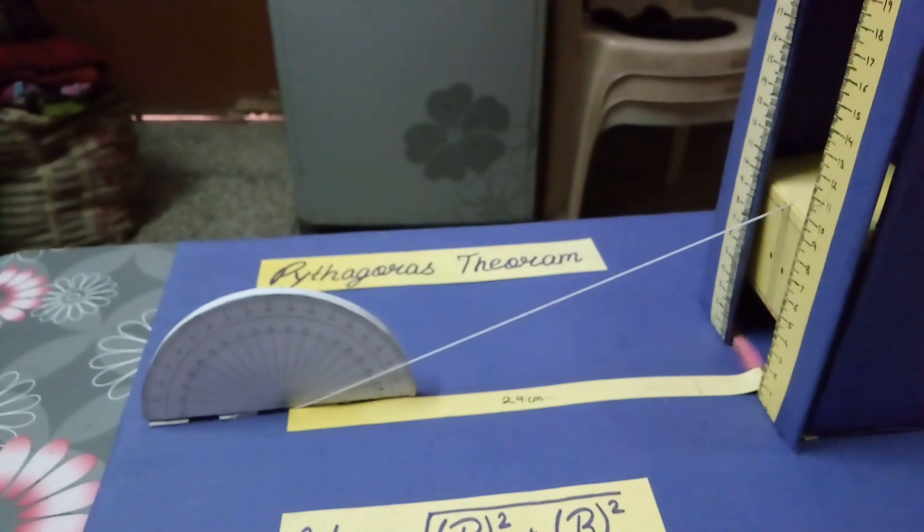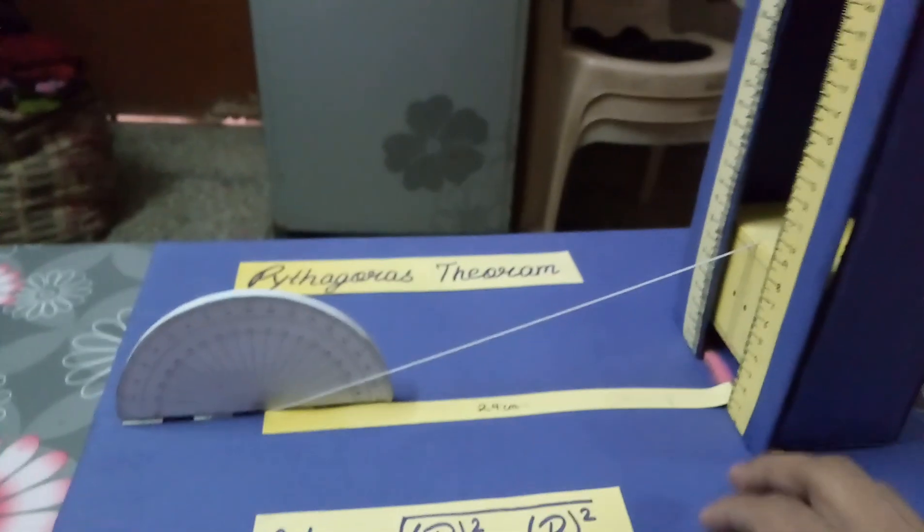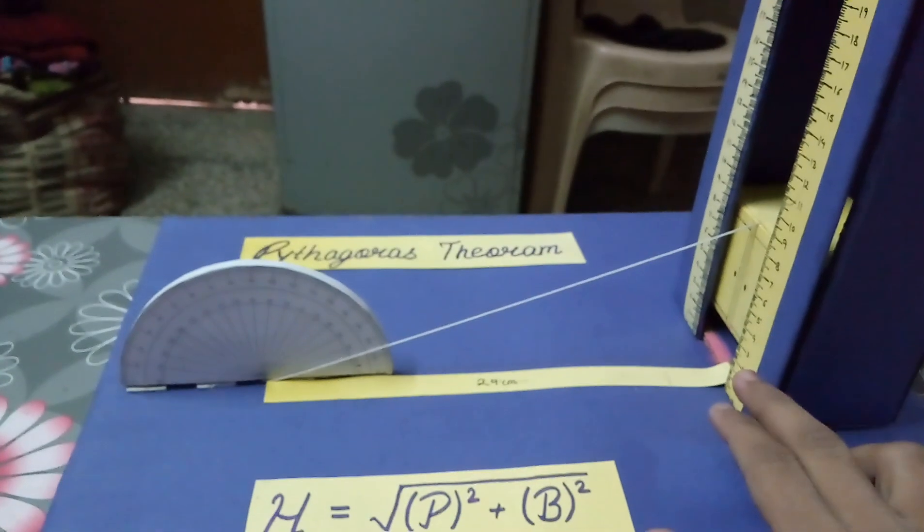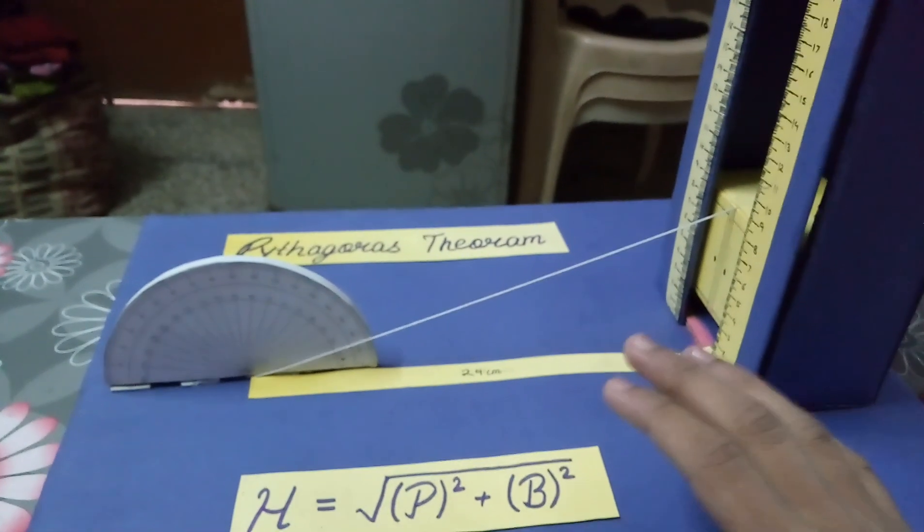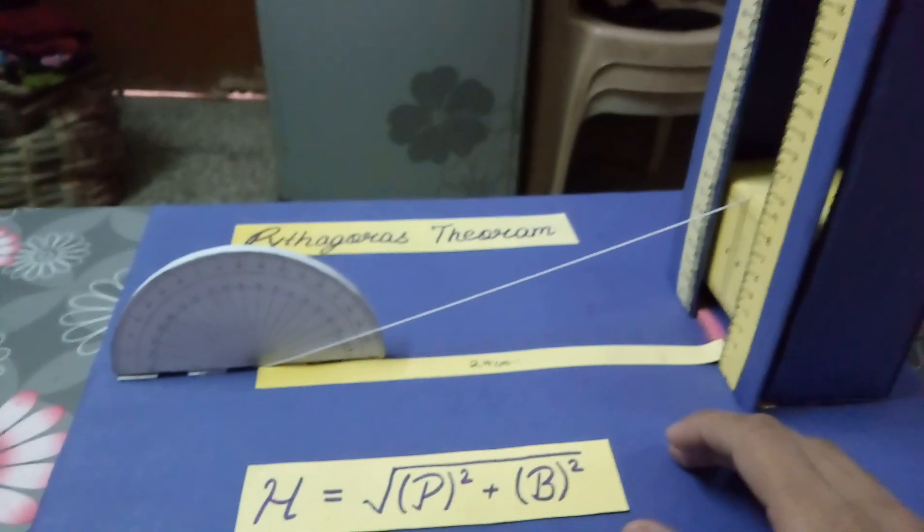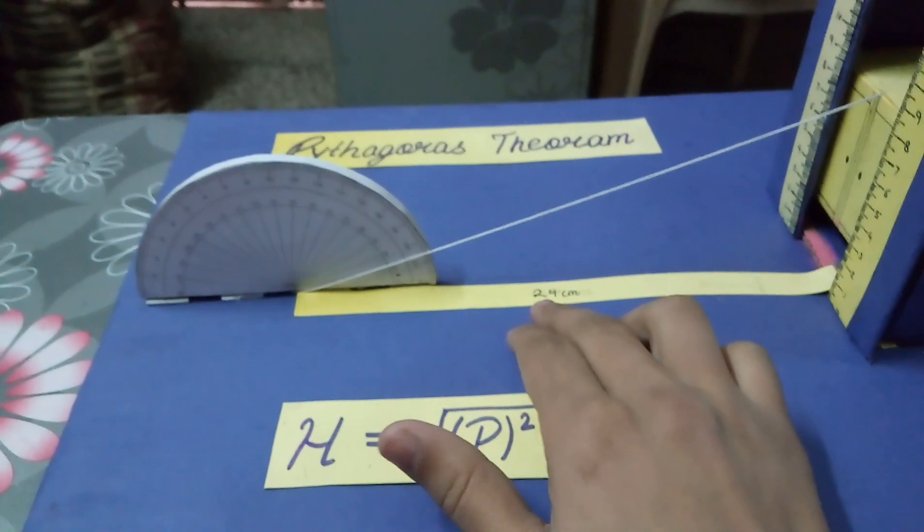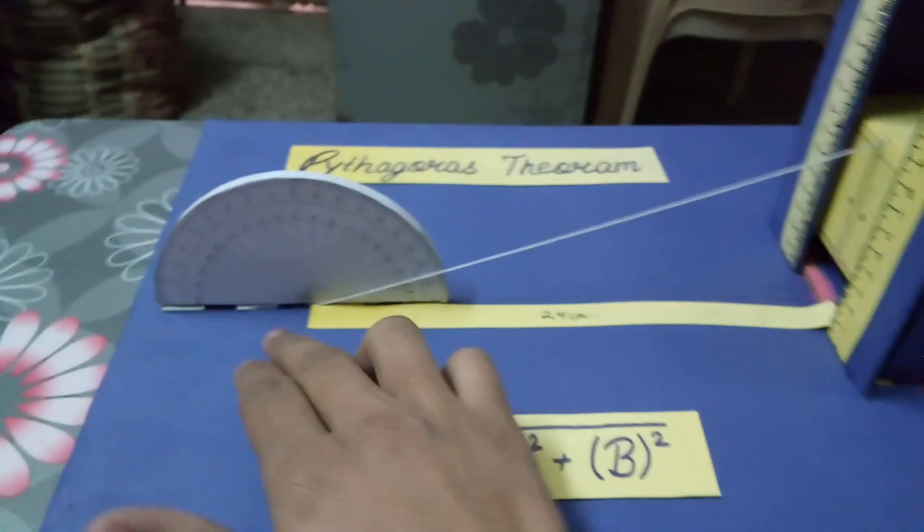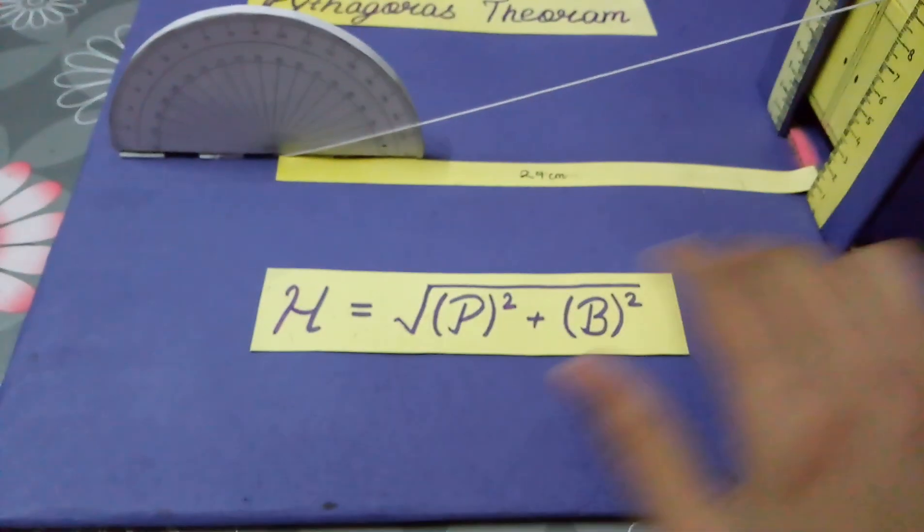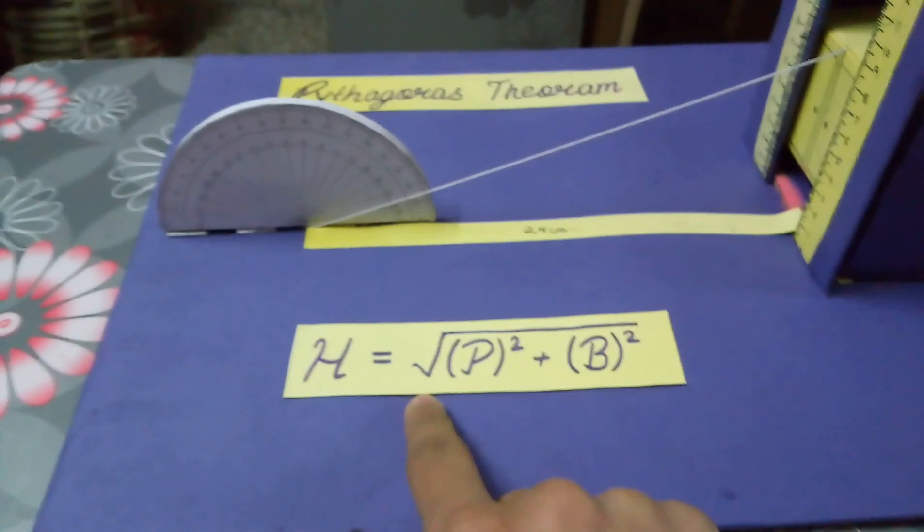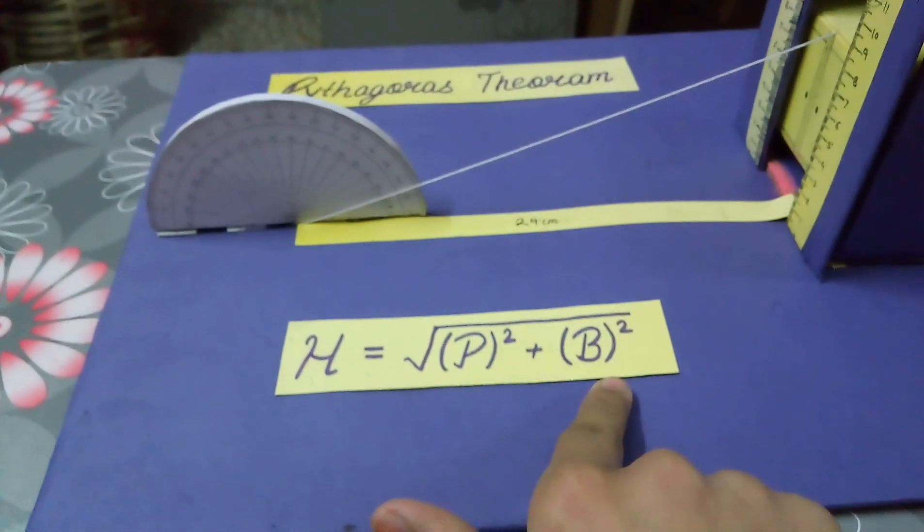Now, as you can see, the difference between the base and the height, I mean the lift, is a constant. So we have marked a constant distance between the center of the D and the lift. By using Pythagoras theorem, h equals to square root of p squared plus b squared, where p is height and b is base, we can calculate this hypotenuse.